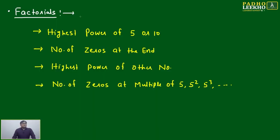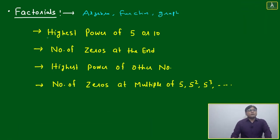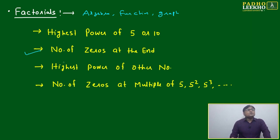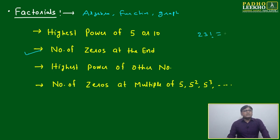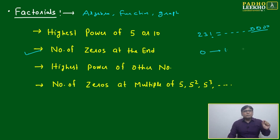The next concept is much related to algebra — functions, graphs, and factorials are all included. From a number theory point of view, it will be challenging to understand how to calculate the highest power of 5 or 10 initially. Once you understand this, you can find the number of zeros at the end of any factorial. For example, 23 factorial is a very big number. The zeros at the end depend on the number of 10s, and 10 depends on 2 × 5.